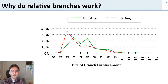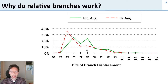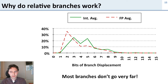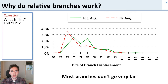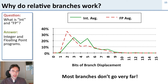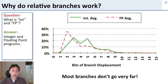Why do relative branches work? We can jump plus or minus 32,000 instructions with a conditional branch. Looking at data across many programs, for most instructions you only need 2 to 5 bits of information to handle a branch, and there are very few cases where you need more than 16 bits. So for almost all branches, the 16-bit conditional branch is sufficient. The graph shows two types of programs — integer (int), such as web browsers or word processors, and floating point (fp), which are more scientific programs — and for both types, 16 bits of branching information is generally enough.